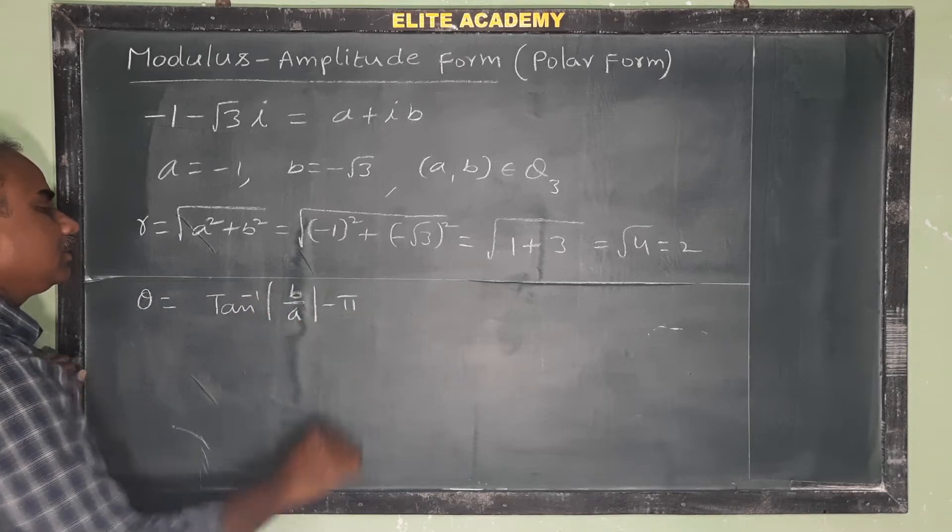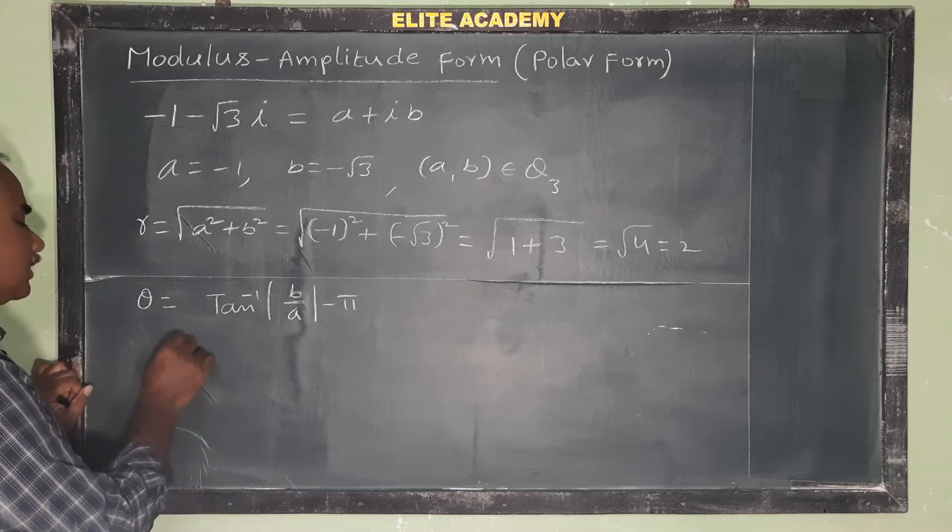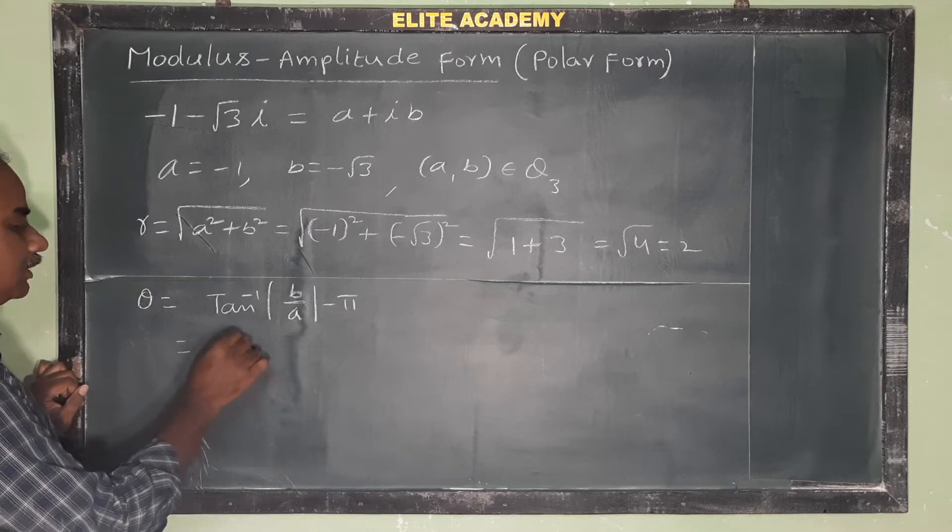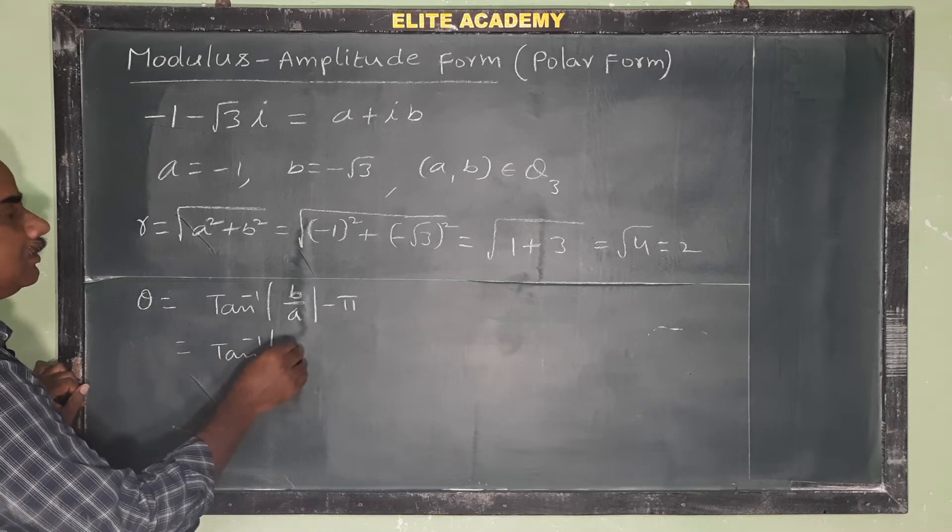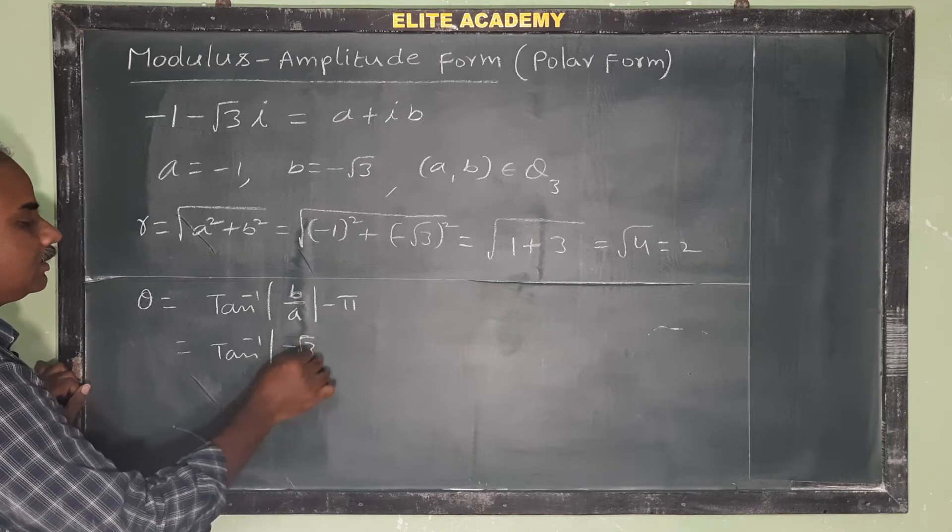Now substitute the values: tan⁻¹(|-√3/-1|) - π.